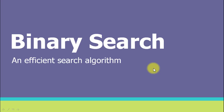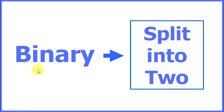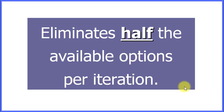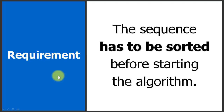Hello everyone and welcome to this video. We're going to see how the binary search algorithm works behind the scenes. The name 'binary' comes from the fact that this algorithm splits the search space into two, eliminating half of the available options per iteration. That is why this algorithm is so efficient.